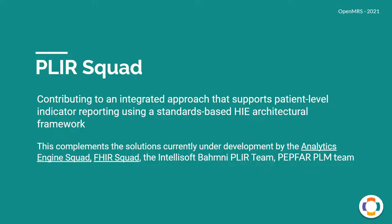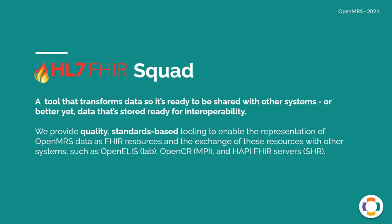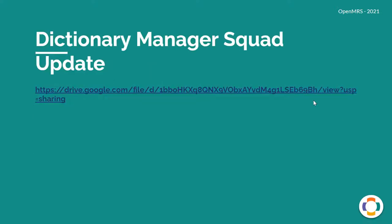This is exciting work, and this will be the last update from the PLIR squad because they have met their objectives. The FHIR squad is working on tooling to transform data that can be easily shared with other systems — not only the FHIR 2 module, but also solutions exchanging FHIR resources with other systems including OpenELIS (a lab system), OpenCR for MPI, and HAPI FHIR servers. We have a number of exciting showcases to share in the next 35–40 minutes. Let's get started with the Dictionary Manager squad.